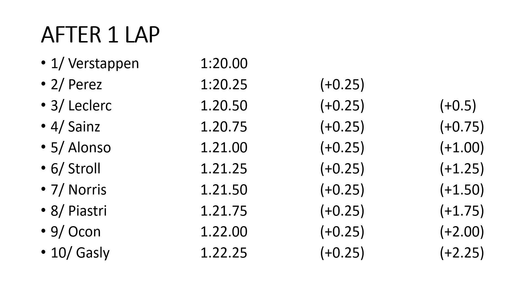After one lap of the race, if they've matched their qualifying times, this is the order as they go across the line — gaps of 0.25 of a second between each car. Which means 10th is now 2.25 seconds behind the lead car. After two laps the gaps have all doubled, so it's now half a second between each car as the field begins to spread out, meaning 10th place is now 4.5 seconds behind the leader.